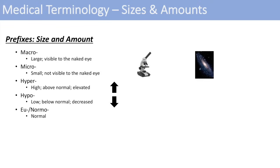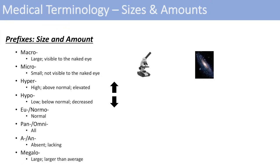Another term is pan or omni, which just means all. Think of omnipotent — all-powerful — or panorama. It encompasses all of something. Another prefix is a or an, which just means absent or lacking. And the prefix megalo also means large, or larger than average.